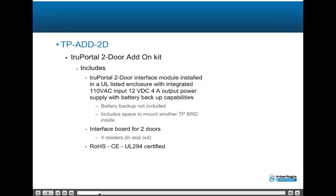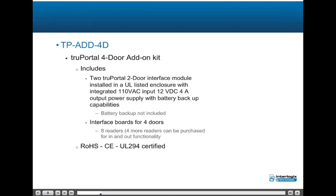The TPA-DD2D TruePortal 2-door add-on kit includes a TruePortal 2-door interface module in a UL-listed enclosure with integrated 110V AC input, 12V DC 4A output power supply with battery backup, space to mount another TPBRD inside, interface board for two doors with four readers in and out, and is ROHS, CE, and UL294 certified. The TPA-DD4D TruePortal 4-door add-on kit includes two TruePortal 2-door interface modules in a UL-listed enclosure with integrated power supply, interface boards for four doors with eight readers, and four more readers available for in and out functionality.